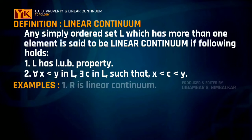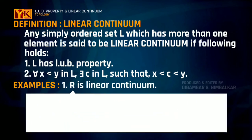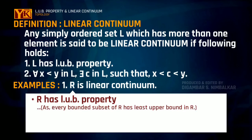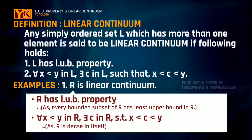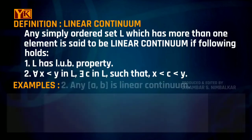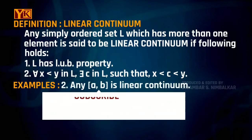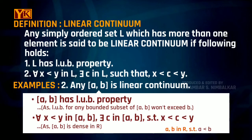For example, the set of real numbers R is a linear continuum. As seen earlier in this video, R has the least upper bound property since every bounded subset of R has a least upper bound in R, and R is so dense that there always exists an element between any two numbers. Further, any closed subset [a,b] of R is also a linear continuum.